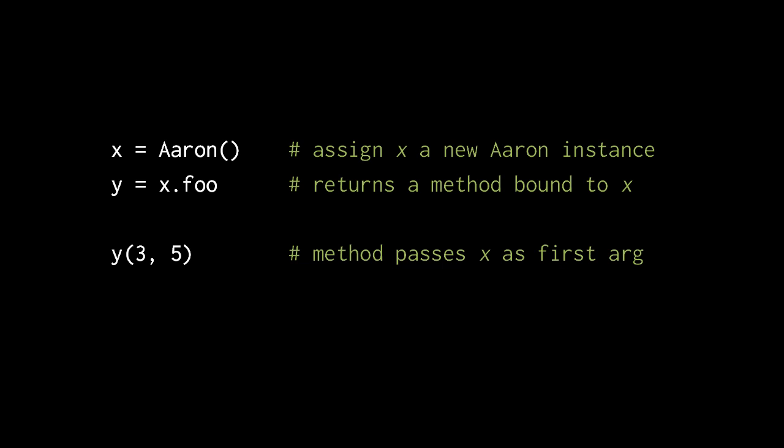So here when we invoke the method object with the arguments 3 and 5, that invokes the function from foo, but with x as the first argument. So the arguments to the function are x, 3, and 5.